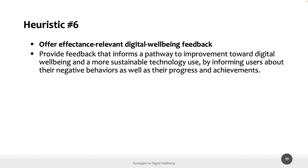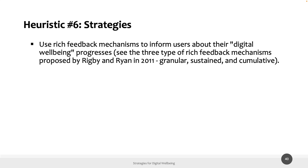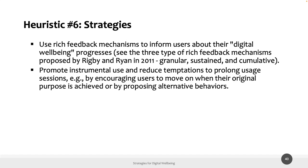Heuristic 6 is 'offer relevant digital well-being feedback': provide feedback that informs users about their improvement towards digital well-being and more sustainable technology use — for example by informing them about negative behaviors as well as their progress and achievements. We suggest looking at a paper proposing three categories of feedback: granular, sustained, and cumulative. Another strategy is to promote instrumental use and reduce temptations to prolong usage sessions — for example by encouraging users to stop using the device when they have achieved their goal.